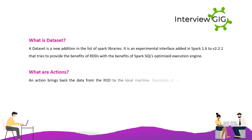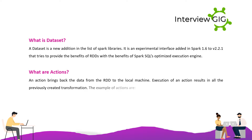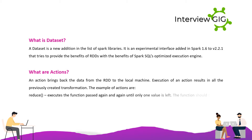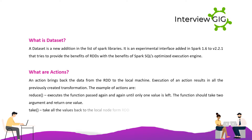What are actions? An action brings back the data from the RDD to the local machine. Execution of an action results in all the previously created transformations running. Examples of actions are: reduce — executes the function passed again and again until only one value is left; the function should take two arguments and return one value. Take — takes all the values back to the local node from the RDD.